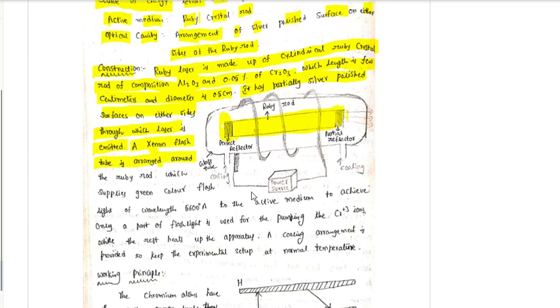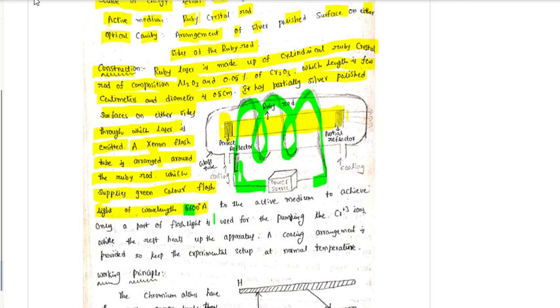A xenon flash tube is arranged around the ruby rod which supplies green color flashlight of wavelength 5600 angstroms. This xenon flash tube emits green color light, which is the optical pumping light used to energize the ruby rod.